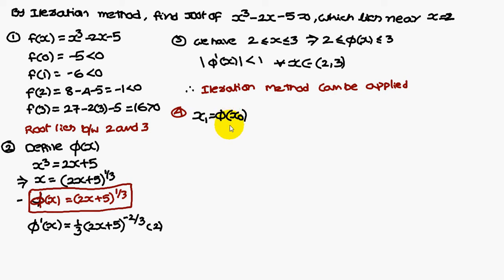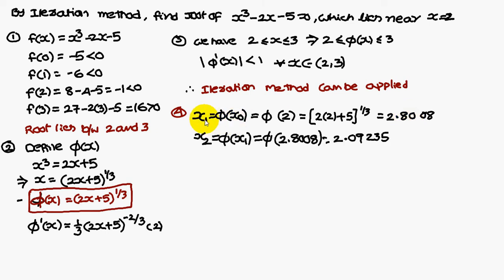x₁ equals φ(x₀), where x₀, the startup value, is given as 2. If given as 2, you consider x₀ as 2, otherwise you can consider 2.5 also. Therefore, φ(2), substituting 2 in the φ(x) function, you will get 2.8008. Now, x₁ is 2.8008.